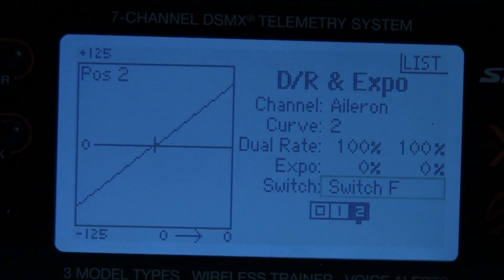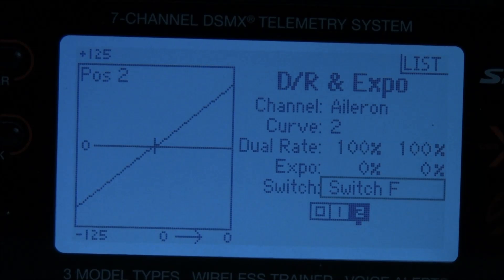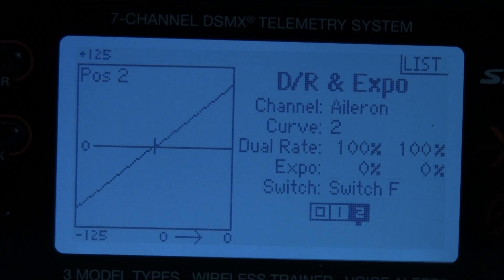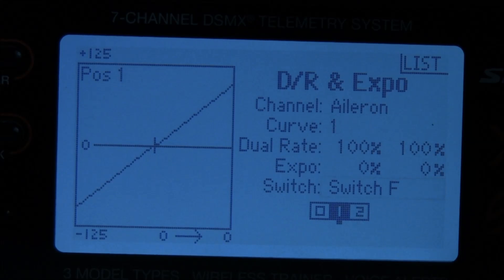I'm going to leave switch F in the lower position. And you'll notice in the middle of it, it says dual rate 100 percent. That's the rate I want at the lowest position. Now in the middle position, I'm going to set that 50 percent. So we're going to switch to the middle position.